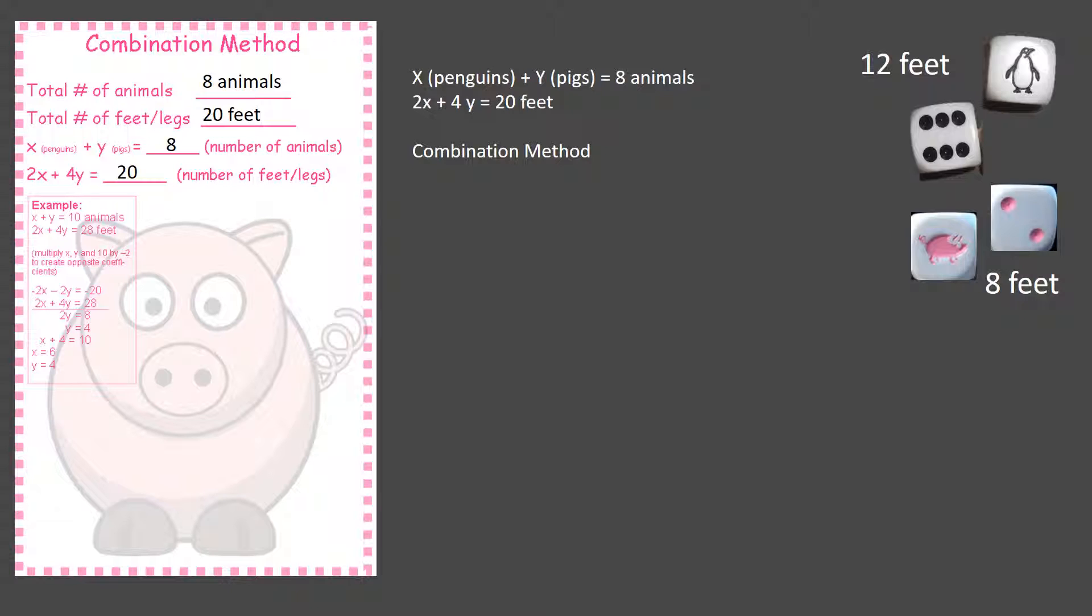To do the combination method, they're going to first multiply negative two to the problem X plus Y equals eight. The reason they're doing negative two is because the other problem, which is 2X plus 4Y, which is our number of feet, has a two in it. So we're going to try to get rid of the 2X. Doing a negative 2X and a positive 2X takes that out to zero. And then the negative 2Y and positive 4Y gets us to zero plus positive 2Y equals four.